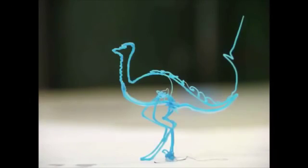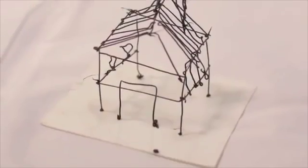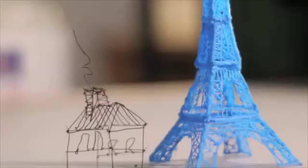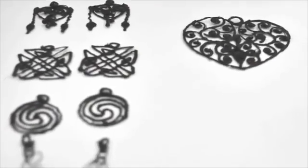So how does it work? 3Doodler uses cutting edge patent pending technology to heat and cool plastic as it passes through the body of the pen. Just like a 3D printer, the plastic cools rapidly and becomes hard.